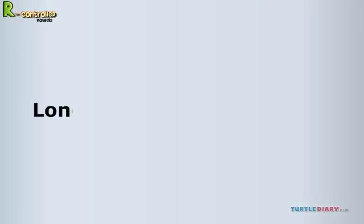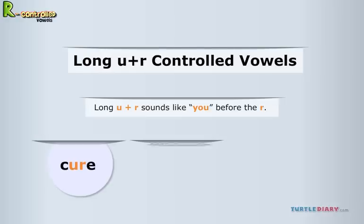Long U plus R controlled vowels. Long U plus R sounds like U before the R, such as in the words cure, picture, and lure.